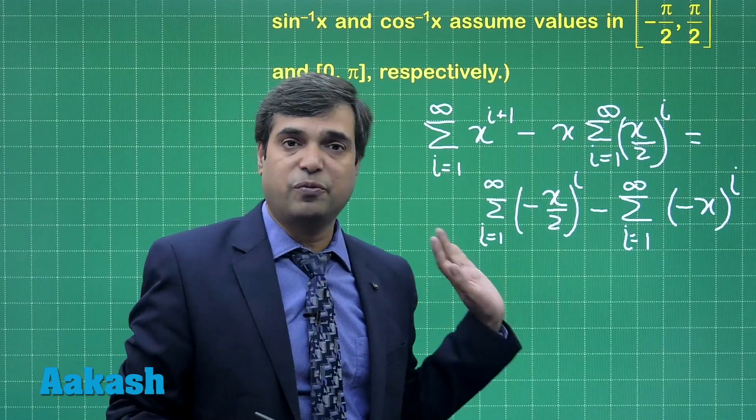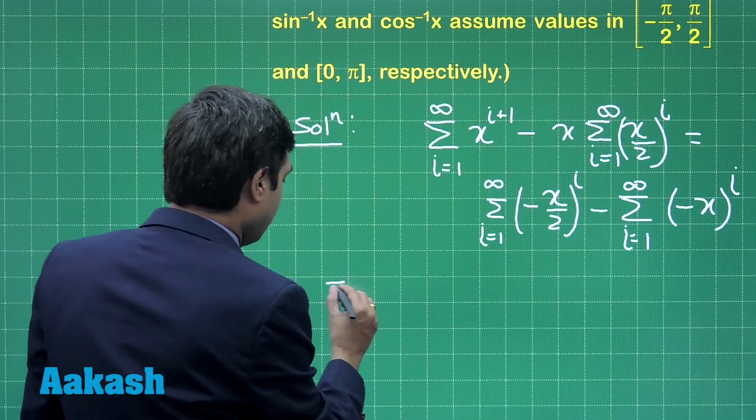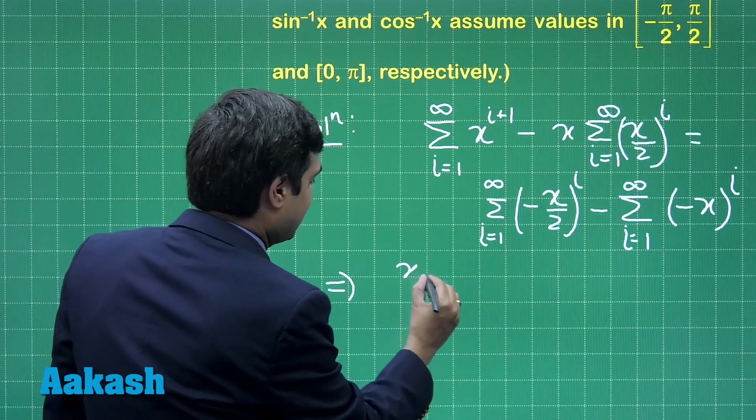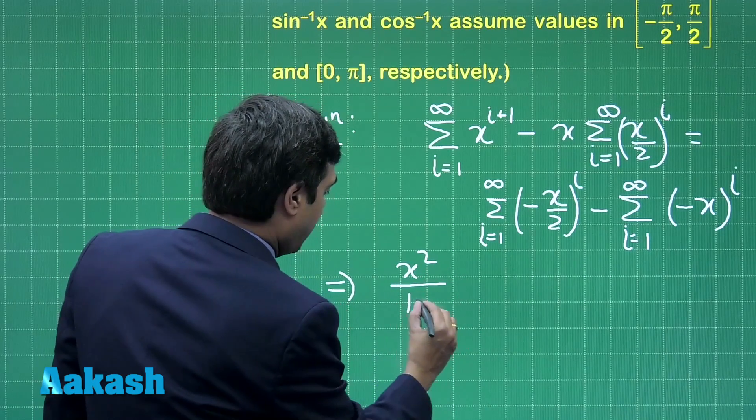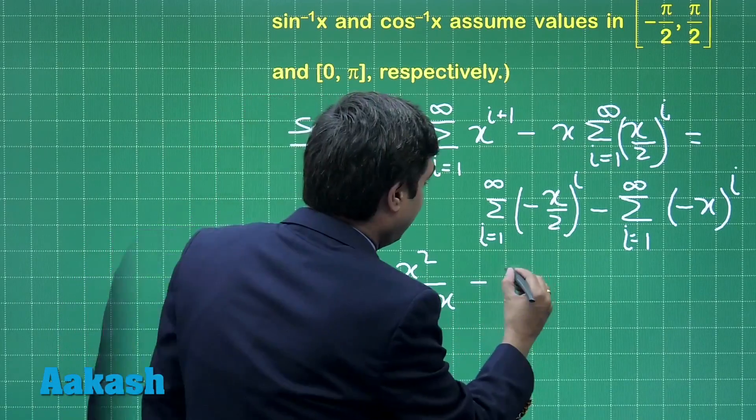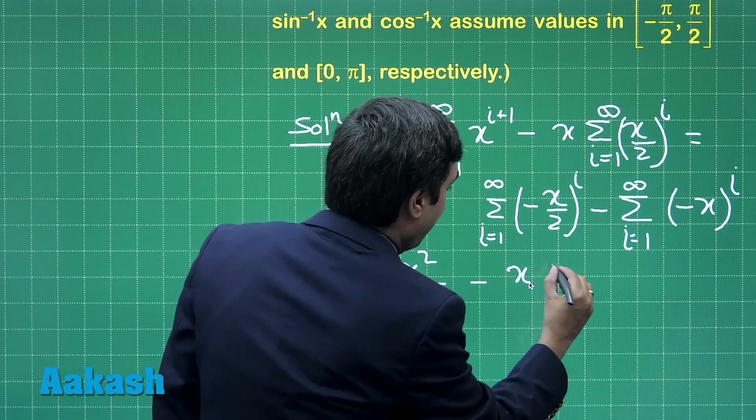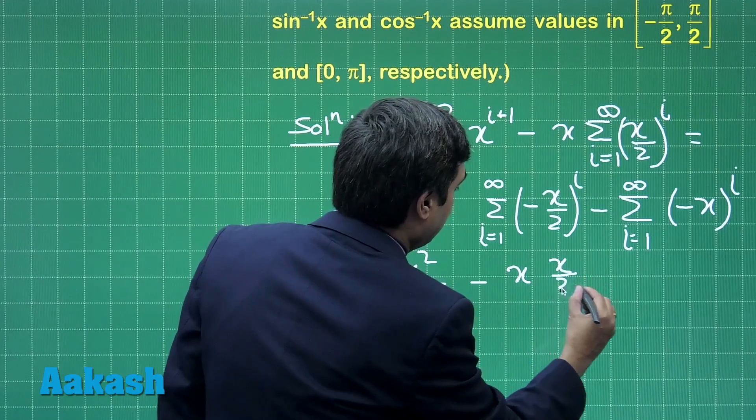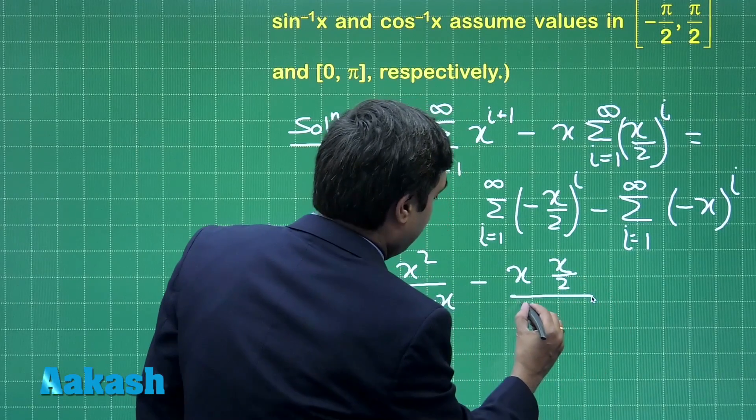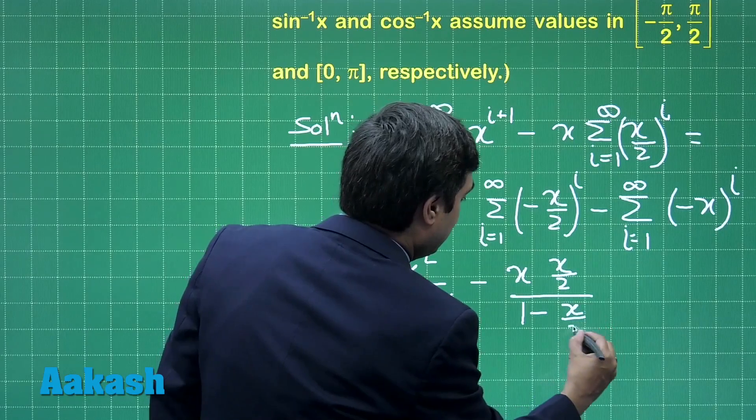So, simple infinite GPs are given, we have to find the sum of the infinite GPs. This gives us x square divided by 1 minus x, minus x multiplied by x by 2 divided by 1 minus x by 2.